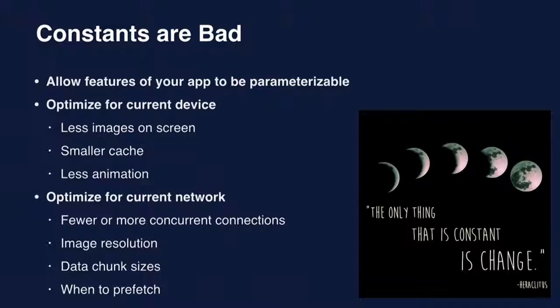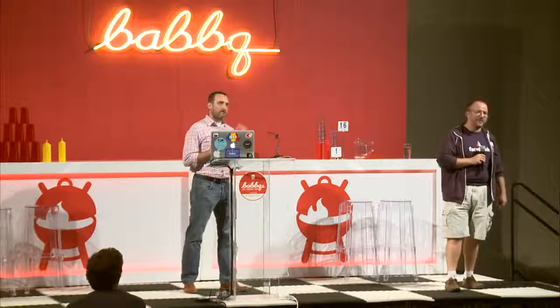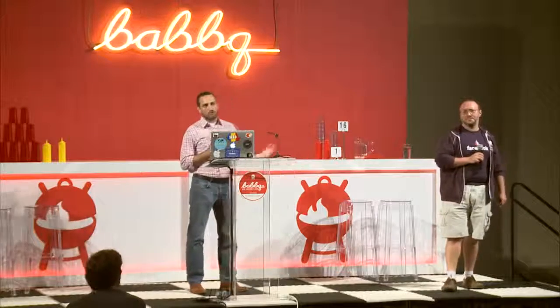This allows us to optimize different interactions for your current device. We show fewer images on screen depending on not only device size but year class. Some devices have big screens and very little RAM. If devices don't have a lot of disk space, we reduce the cache. If an animation we think is really cool doesn't perform well, we can just turn it off on certain devices — for Year Class 2010 there's no point making the user sit through a stuttering animation.